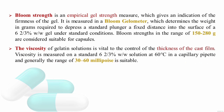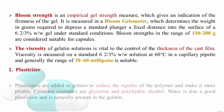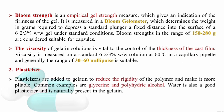Plasticizers are added to gelatin to reduce the rigidity of the polymer and make it more pliable. Common examples of plasticizers are glycerine and polyhydric alcohols. Water is also a good plasticizer and is naturally present in gelatin.